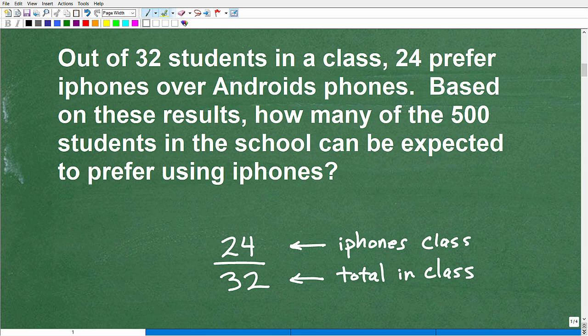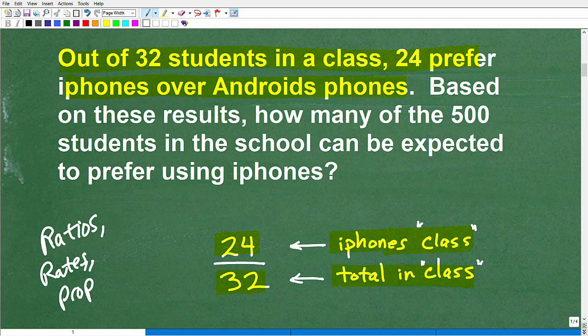Now, so here it is, right? So, out of 32 students in the class, 24 prefer iPhones over Android phones. So, let's just stop there and let's see how we can describe this graphically or some sort of way, some sort of model. What does this mean? Well, it means 24 out of 32 total in the class. So, 24 students out of 32 total students of the class like the iPhones, right? So, they prefer the iPhones. So, this is in the class. So, what we're talking about here, just to kind of tip what's going on, is the topic that is involved is ratios, rates, and proportions.